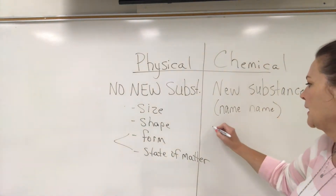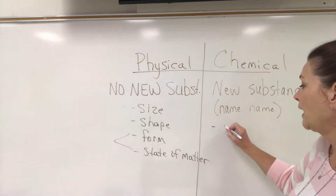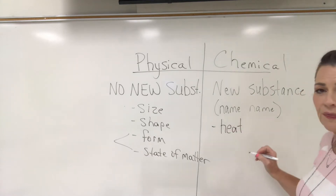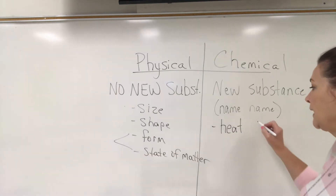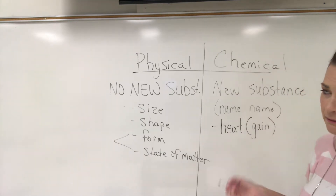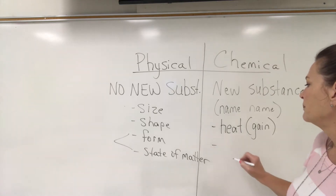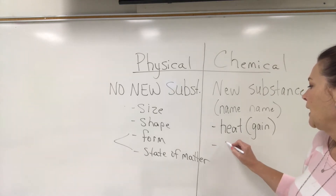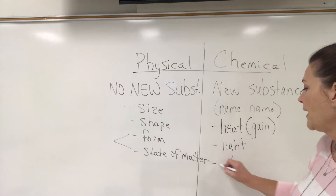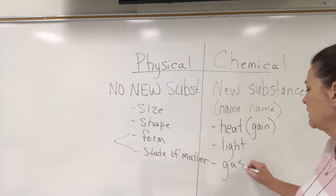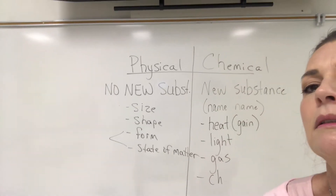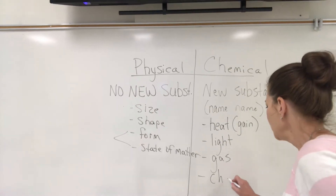Chemical changes can have a change of temperature — something going on with the heat. It will either lose heat or gain heat. Most of the time they give off heat. They can give off light, they will give off gas, or they will change color.